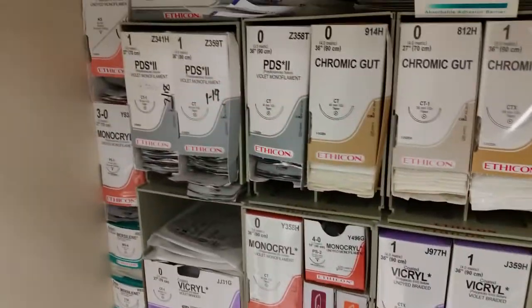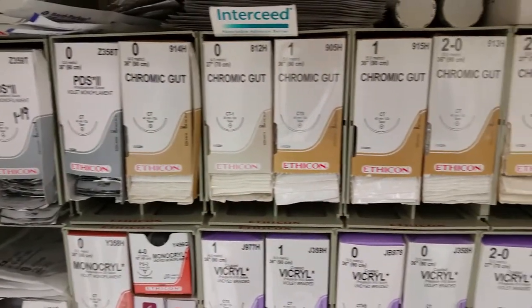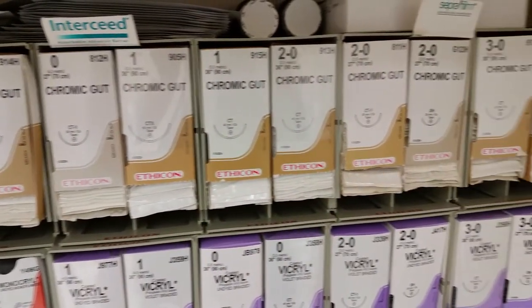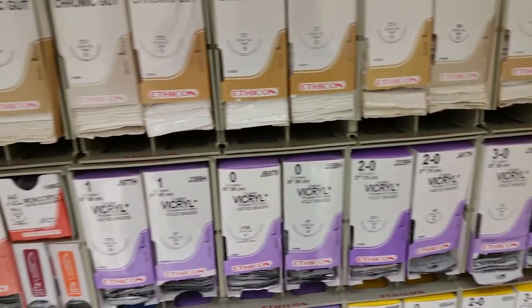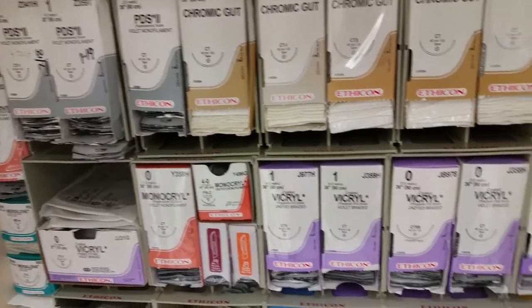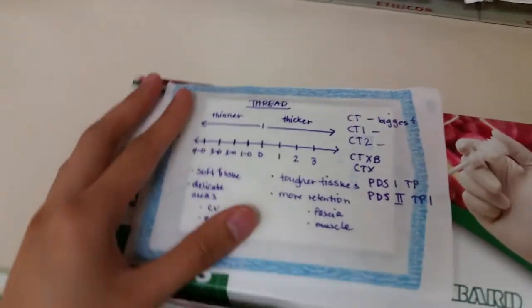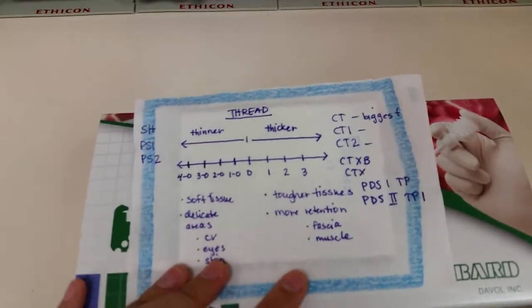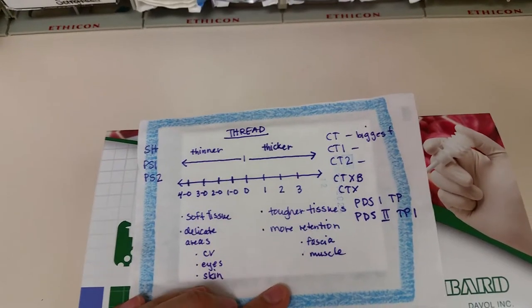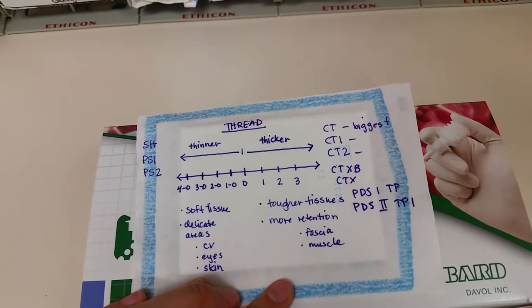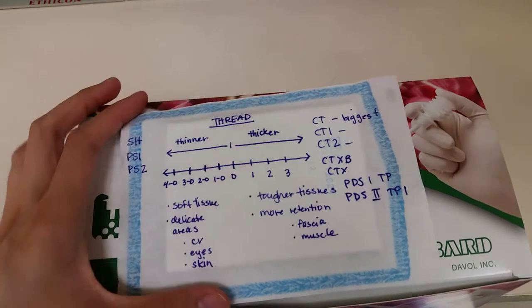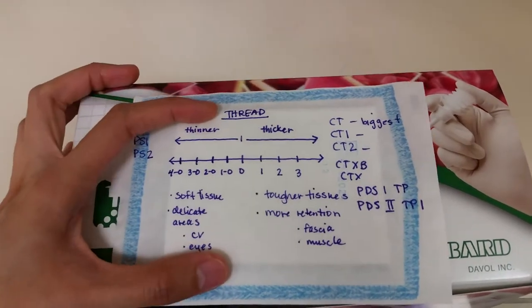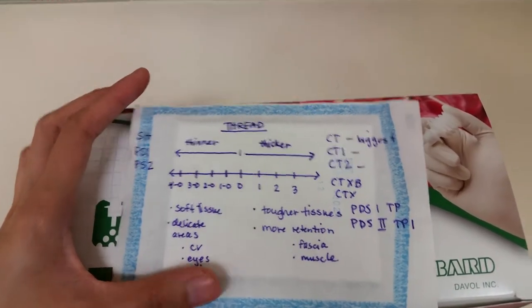Looking at these sutures in the beginning is very intimidating. There are too many numbers, too many things going on on the box, and you don't know which one to pick. I figured out a way to explain it using the number line from algebra — nobody taught me this in school, I just figured it out.